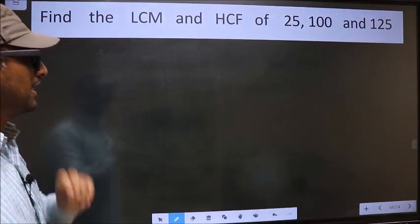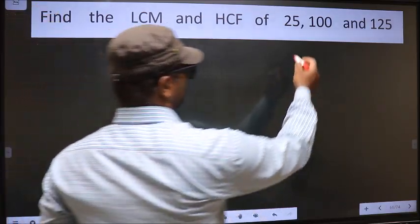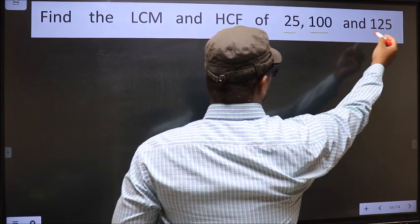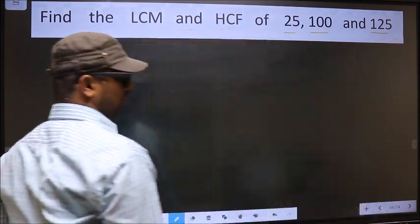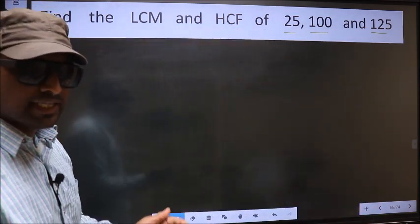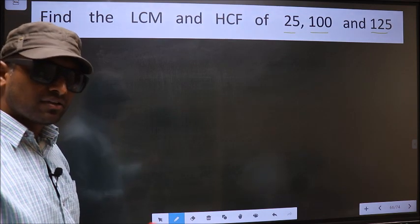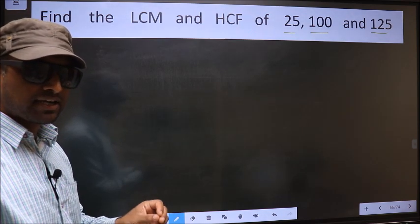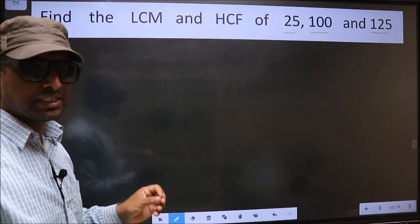Find the LCM and HCF of 25, 100 and 125. To find the HCF and LCM, first we should do the prime factorization of each number separately.